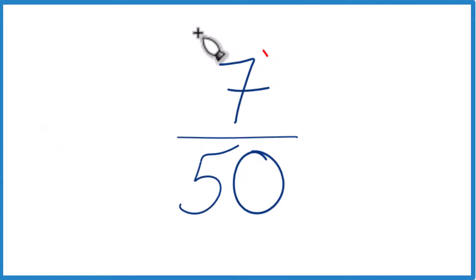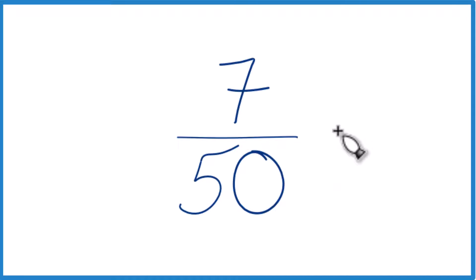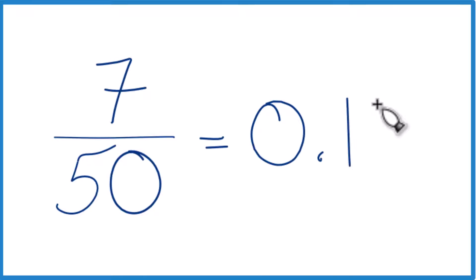So here's how you write the fraction 7/50 as a decimal. The first thing you could do is you could just divide 7 by 50 on your calculator. If you do that, you get 0.14, so that's one way to do it.